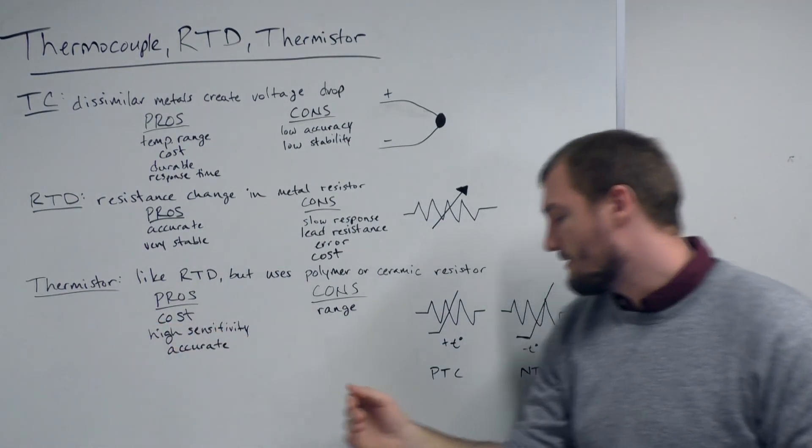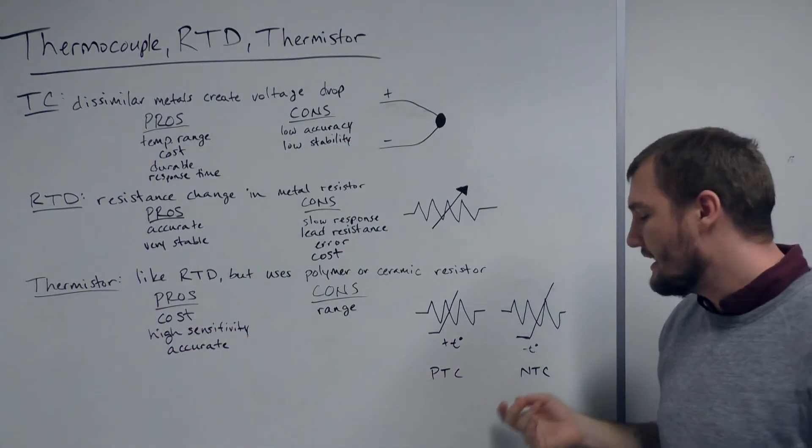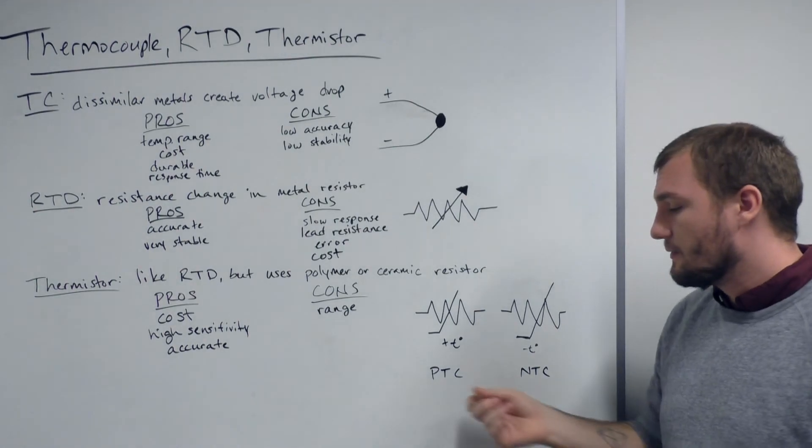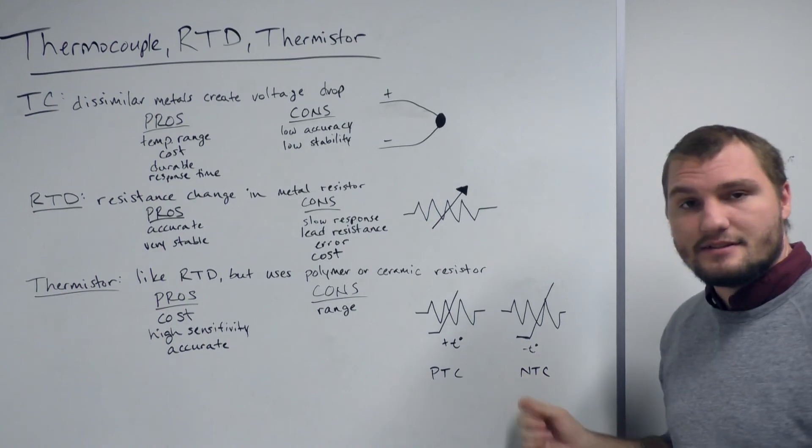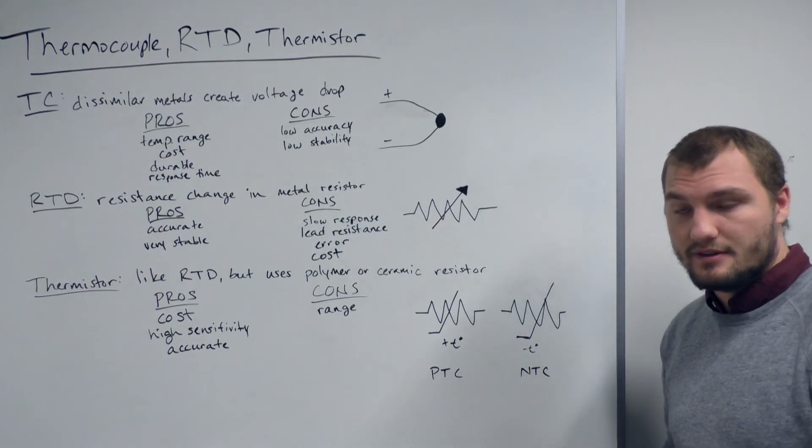For thermistors, there are positive temperature coefficient and negative temperature coefficient types, where the PTCs will increase in resistance with increasing temperature, and the NTCs will decrease in resistance with increasing temperature.